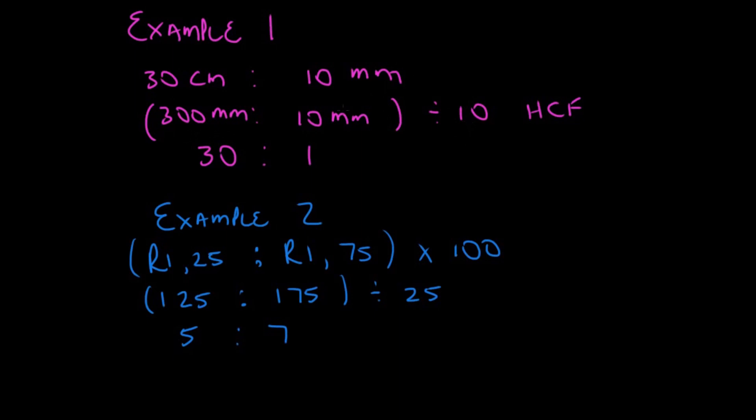What do I do? I divide by 10. Why? Because we need to find our highest common factor. Our highest common factor is 10. We divide by 10 on both sides because what we do on the left-hand side, we must do on the right-hand side. And that gives me 30 as to 1.